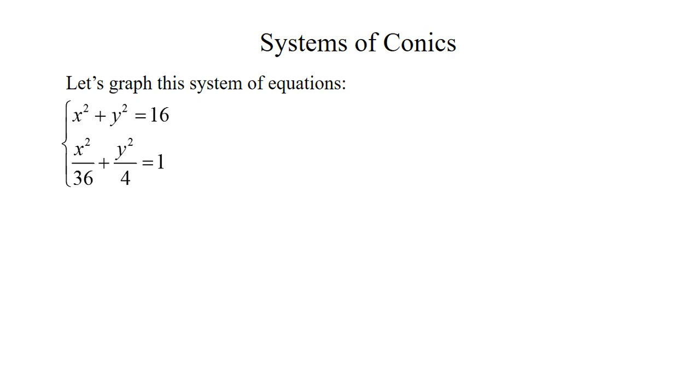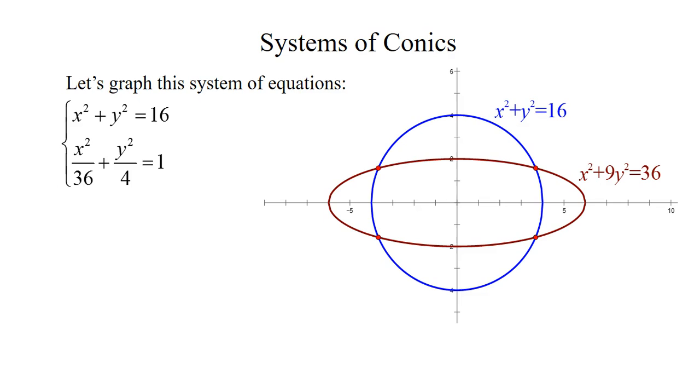So what we want to do is graph the two conics. So first the circle is centered at the origin has a radius of 4. So if you start at the center and you count left, right, up, and down 4, you'll be able to graph your circle.